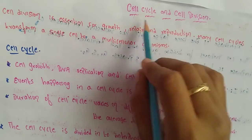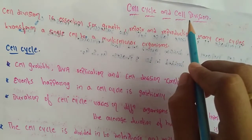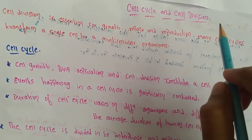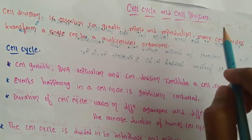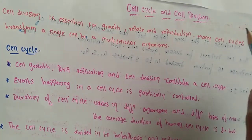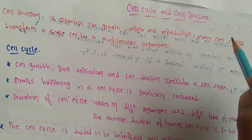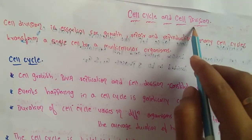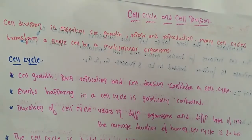The cell cycle is a cycle of stages that cells pass through to allow them to divide and produce new cells. Cell division is the process by which a cell divides into two daughter cells. The parent cell divides into two daughter cells, and this is a part of the cell cycle.